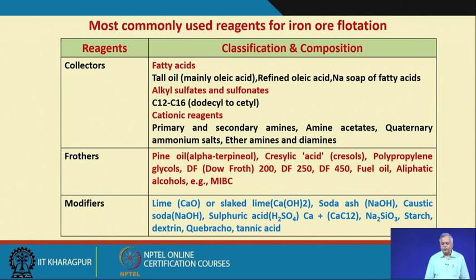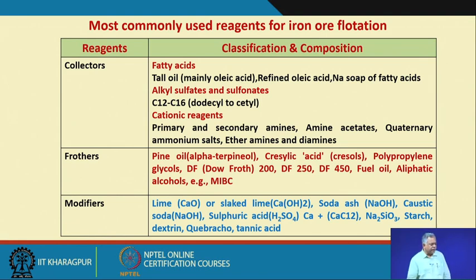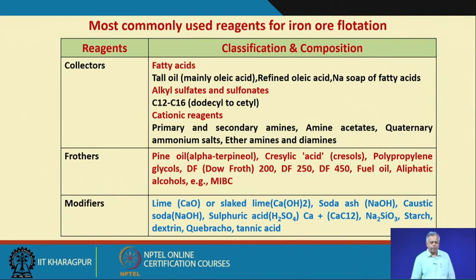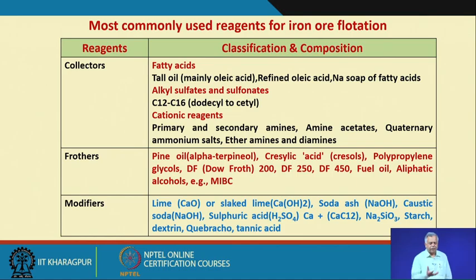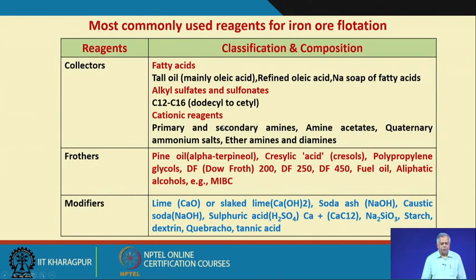It is a challenge to the mineral processing community to determine the right selection of a collector. It may happen that none of the available collectors may be adequate enough for your particular iron ore. In that case you have to do research and find a new collector. Depending on other conditions — like the pH of your water, the temperature of your water, the machine you are using, and the mechanism of mixing between the particle and the fluid — all of these take part in the decision-making process of selecting the right kind of collector.